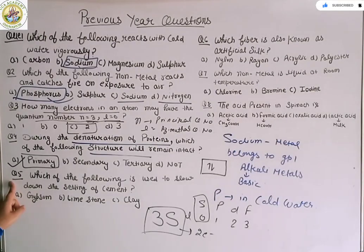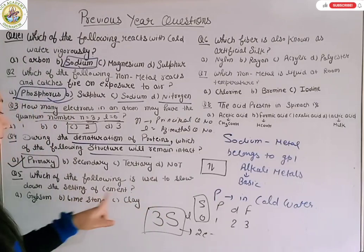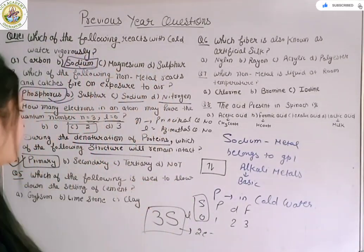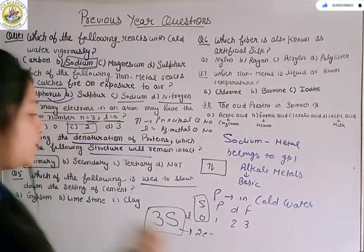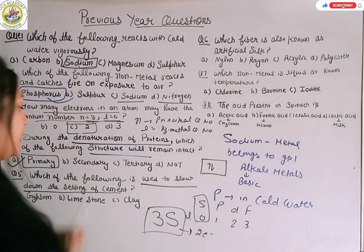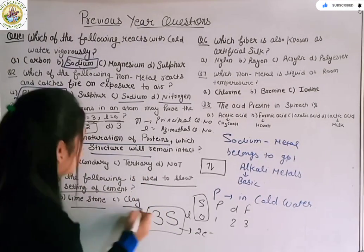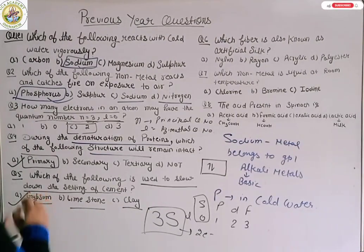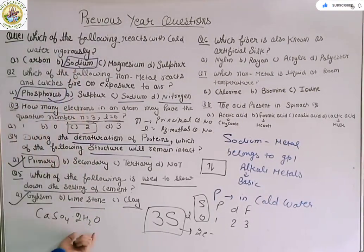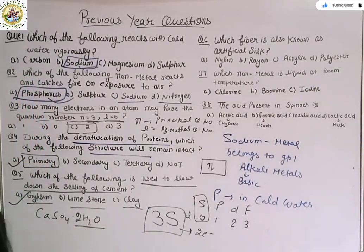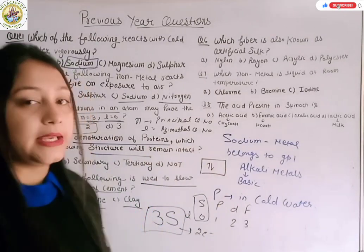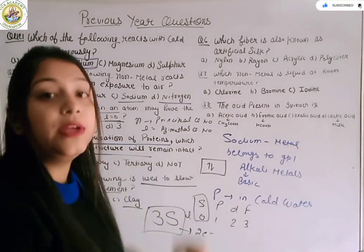So the next question is question number 5. Which of the following is used to slow down the setting of cement? Here we are asked what should we use to slow down the settling time. Gypsum, limestone, or clay. Gypsum, option A is right. Gypsum is CaSO4·2H2O, means calcium sulfate with two moles of water. Now there are water molecules so it can't dry quickly, so this will increase the drying time.